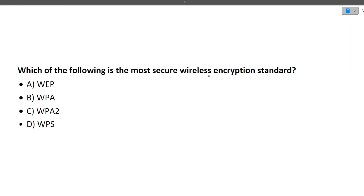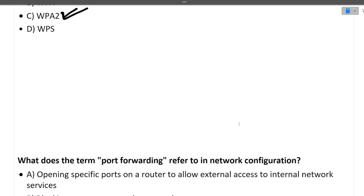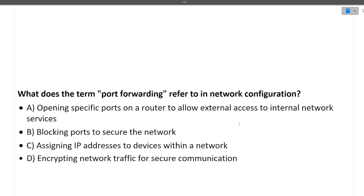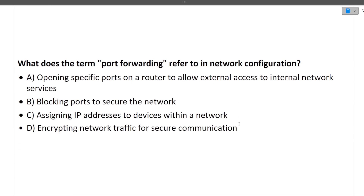The next question is: which of the following is the most secure wireless encryption standard? The answer is WPA2 — it is widely used for wireless encryption.